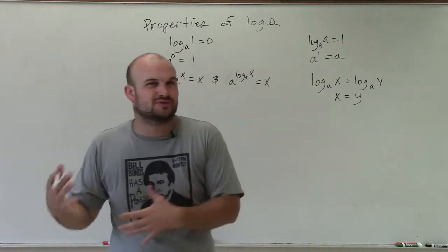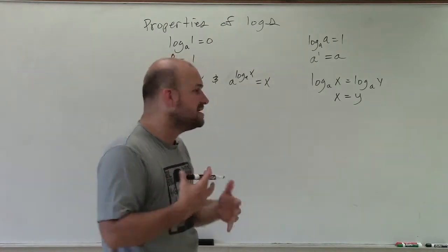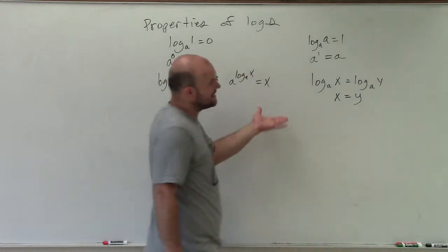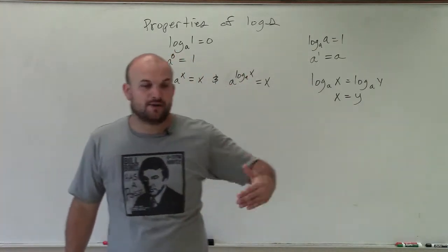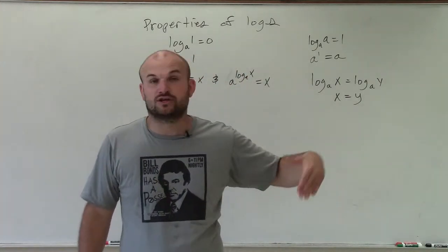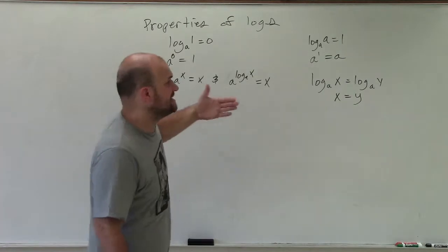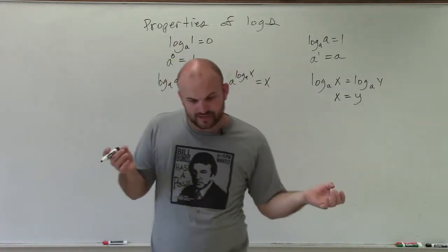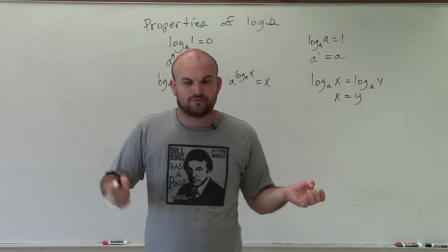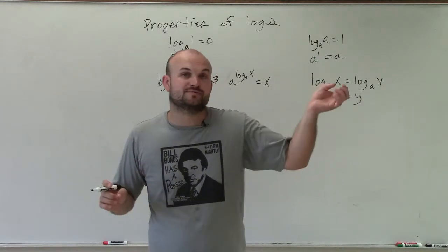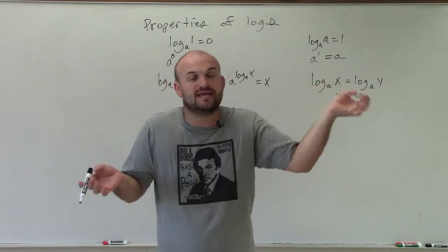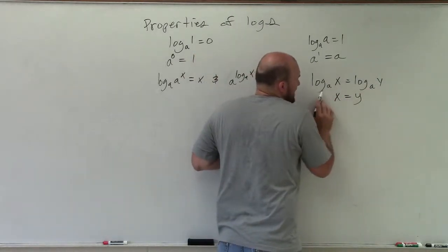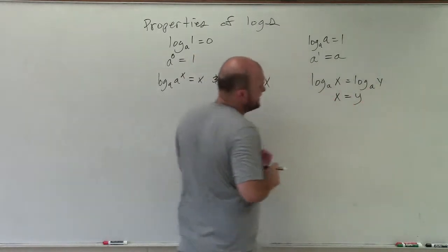We can work through some problems with numbers where this will make more sense. The last one here is the one-to-one property, which is very powerful. As long as the bases are the same — for example, if 3 raised to the 5th equals 3 raised to the x, then x must equal 5. As long as the bases are the same, what you're evaluating must be equal.